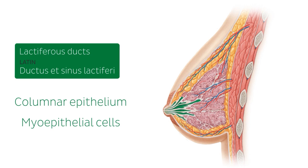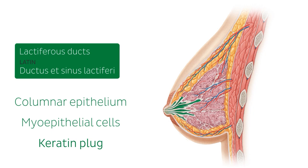It was previously believed that the breasts contained a higher number of ducts and were also involved in milk storage. It was believed that the milk was stored in a dilation of the duct known as the lactiferous sinus. However, more recent studies have found that this is in fact incorrect. When a woman is not lactating, the lactiferous ducts are often blocked by a keratin plug which prevents bacteria from entering the ducts and therefore helps prevent infection.